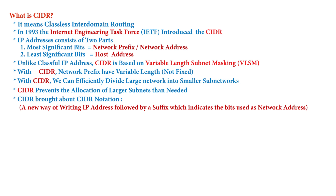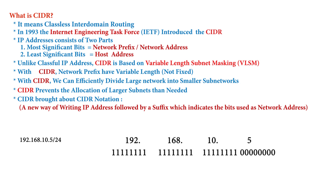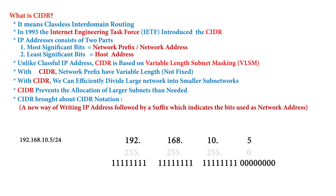For example, writing an IP address with /24 means that the subnet mask's network portion contains 24 ones starting from left to right. Converting those 24 ones into decimal gives us the subnet mask. So the subnet mask for this IP address in /24 prefix notation is 255.255.255.0.